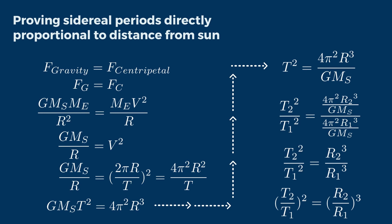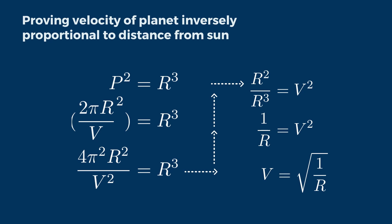Here's how we prove it. Using the same equation T² ∝ R³, we replace T with 2πR divided by V and square the whole thing. Recall that V = 2πR divided by sidereal period T, so making T the subject gives us 2πR divided by V. After manipulating by bringing R to one side and cancelling 4π² — since it represents just a constant — we get 1/R ∝ V². Finally, making V the subject, we get V = √(1/R). Therefore, this equation proves that the velocity of the planet is inversely proportional to the distance of the planet from the Sun.